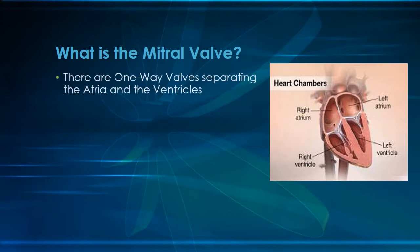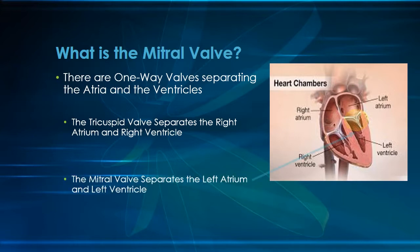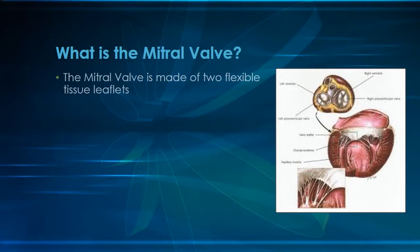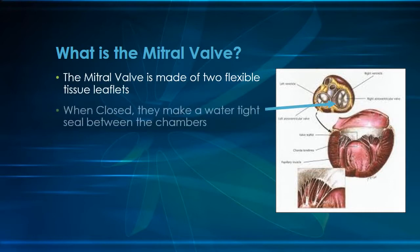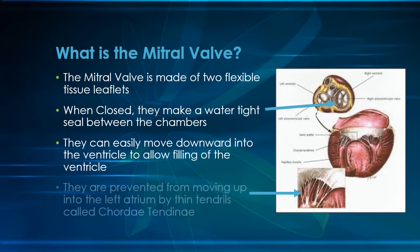There are one-way valves separating the atria and the ventricles. The tricuspid valve separates the right atrium from the right ventricle and has three leaflets or cusps. The mitral valve separates the left atrium from the left ventricle and has two leaflets. When they close, they form a watertight seal which prevents blood from going from the ventricles back up into the atrium. Thin tendrils of connective tissue called the chordae tendinae prevent the valves from prolapsing into the left atrium.